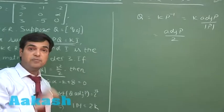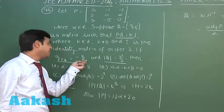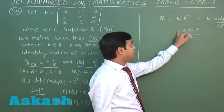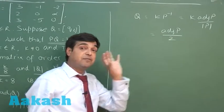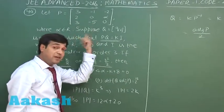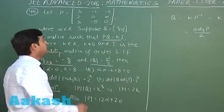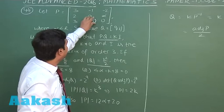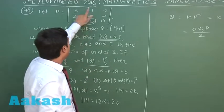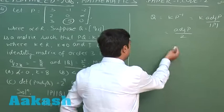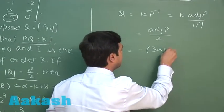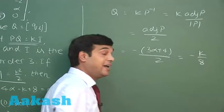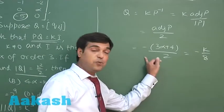One more piece of information given is that Q₂₃ = -k/8. Since Q = adj(P)/2, we can find adj(P) and from there get element Q₂₃ as the cofactor of element (3,2), which gives -(3α + 4) divided by 2, and this equals -k/8.